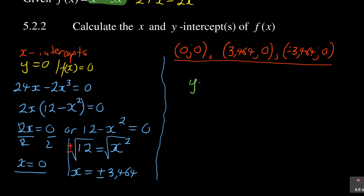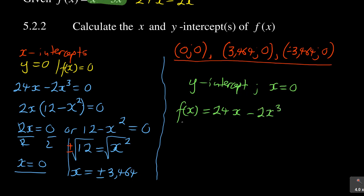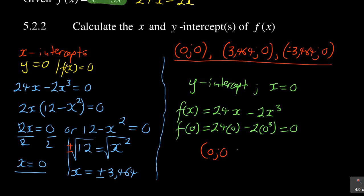For the y intercept, the condition is x must equal zero. So f(0) equals 24 times 0 minus 2 times 0 cubed, which equals zero. In coordinate form, when x is zero, y is also zero. So the y intercept is (0, 0) — the same as the first x intercept. The x intercepts are x equals 0 and plus or minus 3.464, and the y intercept is also zero.